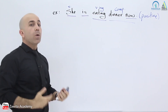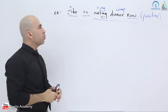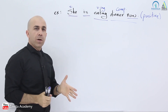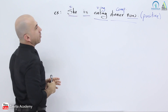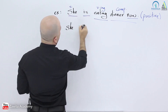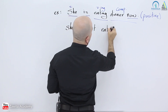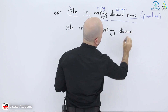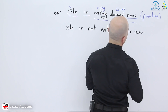If you want to change it to negative, the easiest thing is to add 'not' after the helping verb. For example: 'She is not eating dinner now.' The only change we made was adding 'not' — and this is the negative form.